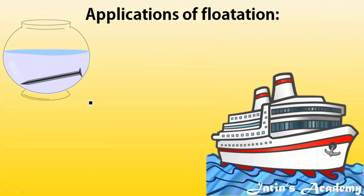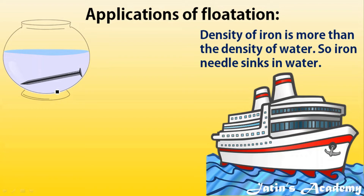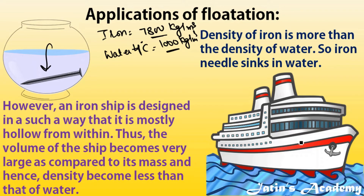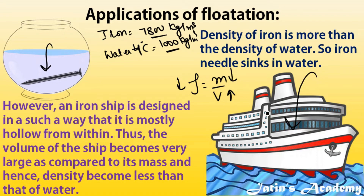The second application: the density of iron is more than water. The density of iron is 7800 kg/m³, while the density of water at four degrees Celsius is 1000 kg/m³. So density of iron is greater, meaning iron should sink. But iron ships float because they are hollow inside — having more volume. More volume means less density. Because the hollow iron ship has less effective density, it floats on water.